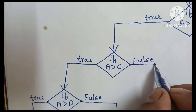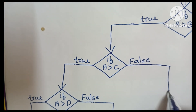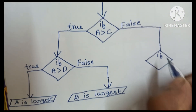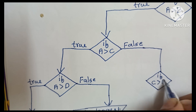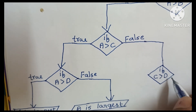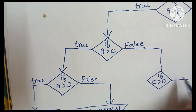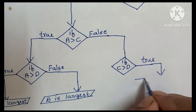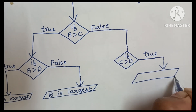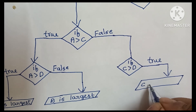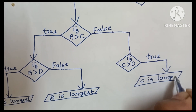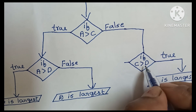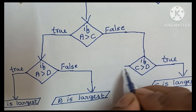In case A greater than C is false, we compare C with D. If C is greater than D, this condition is true, so we print 'C is largest'. In case C greater than D is false, we print 'D is largest'.